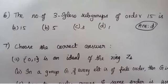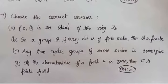And sixth question. The number of three Sylow subgroup of order 15. Order 15, we do prime factorization 3 into 5. So the answer is option D. And seventh question. Choose the correct option. Option C. Any two cyclic groups of same order are isomorphic. This is very clear result. So answer is option C.